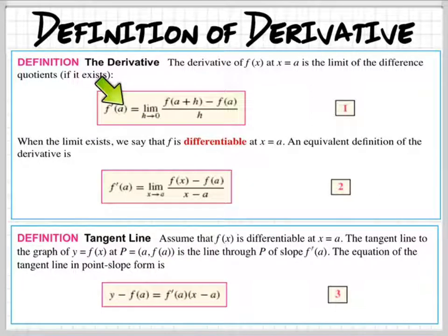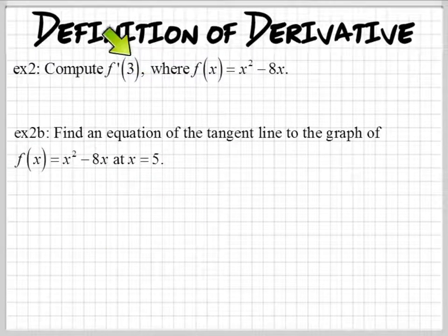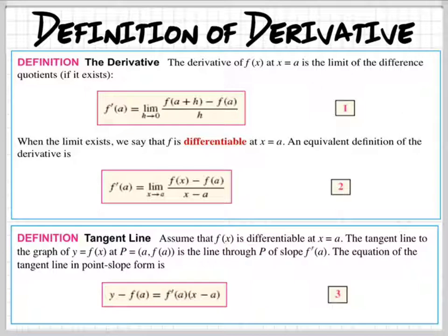So f prime of a, now a is a number that you're plugging in. When there's an a here, like see, it says x equals a. We could have just put f of x right here and changed this a to an x. A is where the derivative is being taken at. See right here, it's being taken at 3. So in this case, the a would be 3.